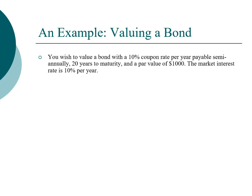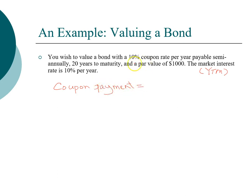In this example we have a bond with a 10% coupon rate. When we say this is a 10% bond, the 10% refers to the coupon rate. It has a par value of a thousand dollars and the market interest rate is 10%, which is the yield to maturity. To find the value of the bond, we need the coupon payment: 10% on a thousand dollars is $100, but because this bond makes semi-annual payments, we divide by two, so this bond pays $50 every six months.